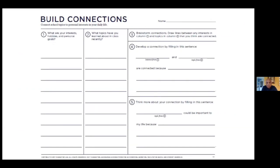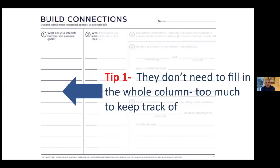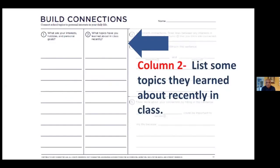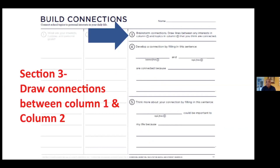I could not believe the results until I went back, because the tool is so simple. It's a one-page black-and-white document that you could adapt to any teaching level. Column one is where you ask students to list or draw their personal interests, hobbies, and goals. A tip: don't insist they fill out the whole column — maybe they only have four things they're really interested in. Column two is where you ask them to list topics they are learning about recently in class. You might help them by pointing to posters, anchor charts, or word walls to generate vocabulary.